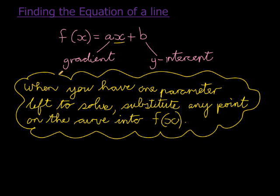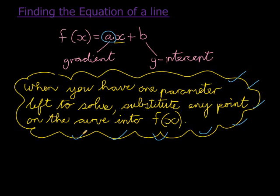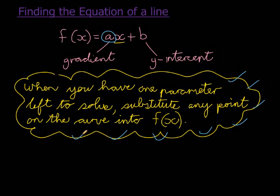This is the main idea we are going to use. No matter what information they give us, we find the gradient first. Once we have the gradient, we use substitution to find b, because with a already known, we have one parameter left to solve. They can give you the gradient either directly or indirectly.